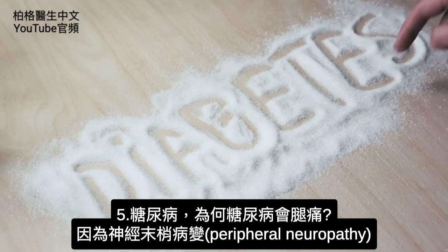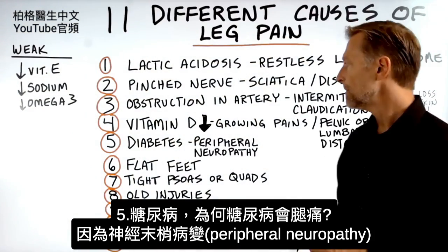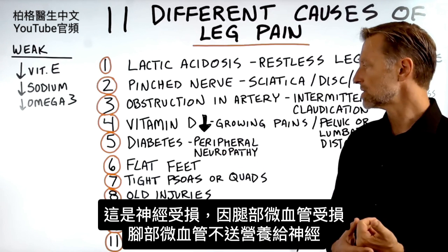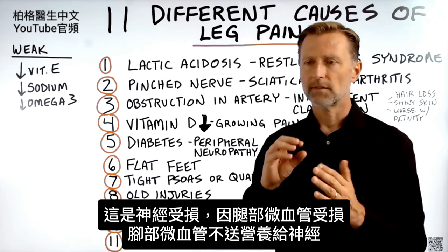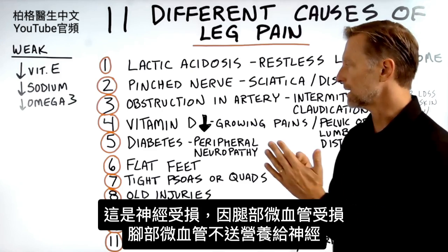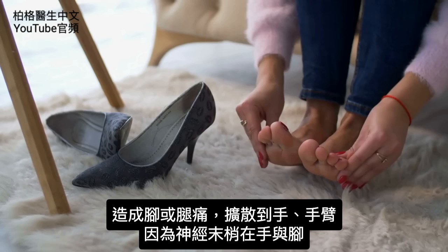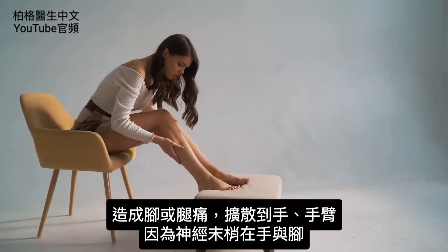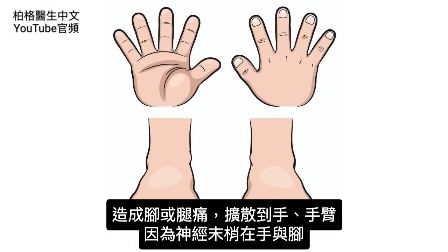Number five: diabetes. Why would you have leg pain with diabetes? There's a condition called peripheral neuropathy — nerve damage caused by the vascular component, where the capillaries get damaged and can't feed the nerves. It can be foot pain or leg pain, and then it spreads into the hands and arms. It's called peripheral because those are the peripheral parts of your body.